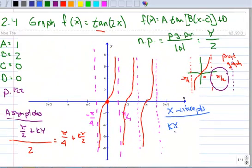They occur at every k times π. It starts at 0, so if k is 0, 0 times π is 0. But now you're going to divide that by the absolute value of B, so that's 2. So those things are going to occur every k times π over 2.